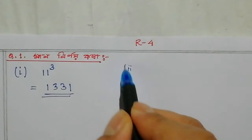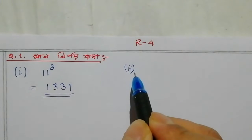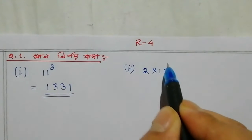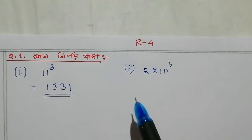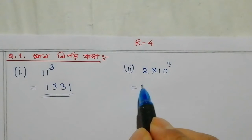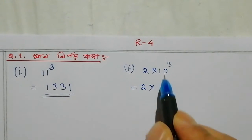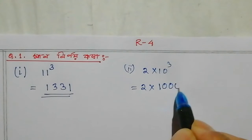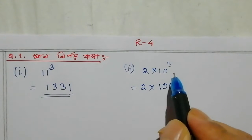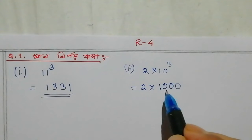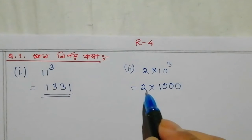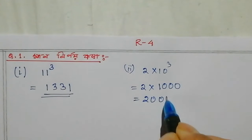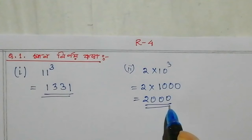Number 2 is equal to 2. So, 2 into 10 cube is equal to 1000. So, 2 into 1000 is equal to 2000.